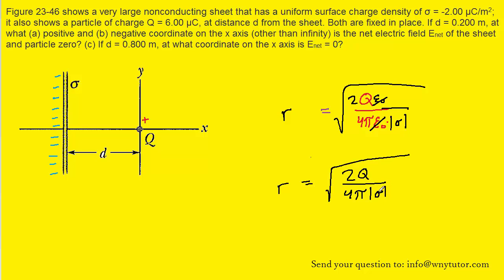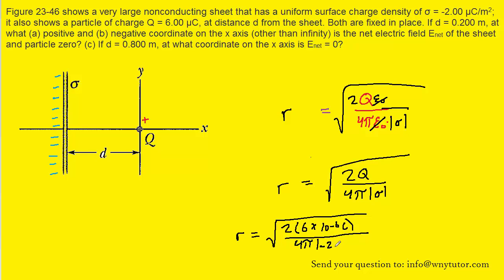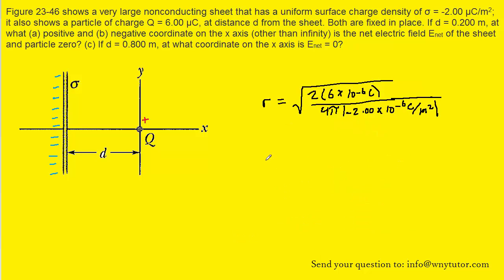At this point we can plug in the known values. Uppercase Q was given in microcoulombs, so we convert it to coulombs by multiplying by 10 to the minus 6. In the denominator we have 4 pi times the magnitude of the uniform surface charge density, whose value is negative 2 microcoulombs per meter squared — but because we're taking the absolute value, it becomes positive. That's also multiplied by 10 to the minus 6 coulombs per meter squared. Working this out gives a value of approximately 0.691 meters.